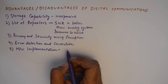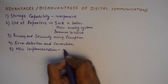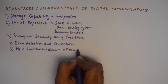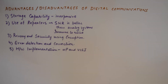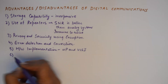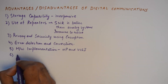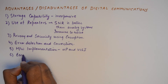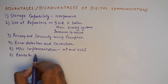It is super easy to implement digital systems using microprocessors and VLSI design, and the system is compact and consumes lesser energy. So hardware implementation is possibly one of the biggest advantages of digital communication.